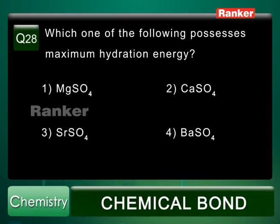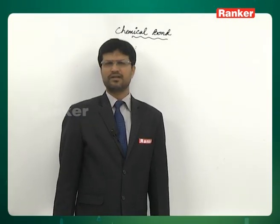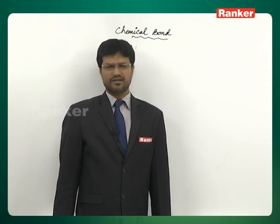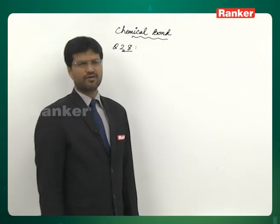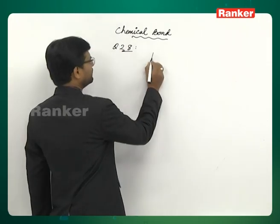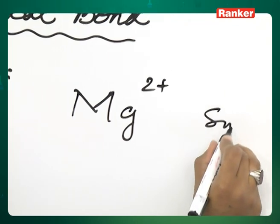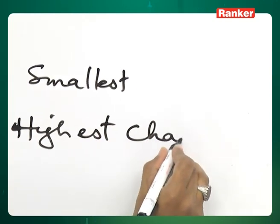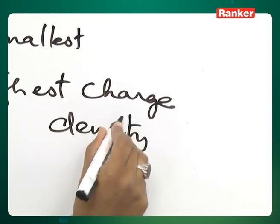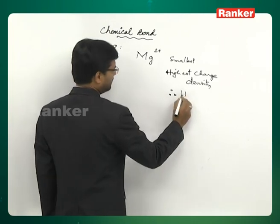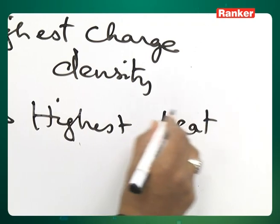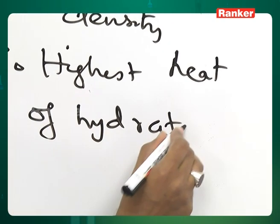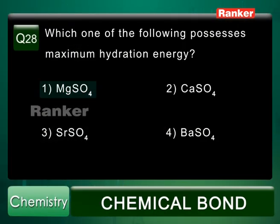Question number 28: Which one of the following possesses maximum hydration energy? Options: MgSO4, CaSO4, SrSO4, BaSO4. All have a common anion — sulphate — so we decide based on the cation. The smallest cation is Mg2+. Because of the very small size of Mg2+, its charge density is highest, giving it the highest heat of hydration. Answer is first option, MgSO4.